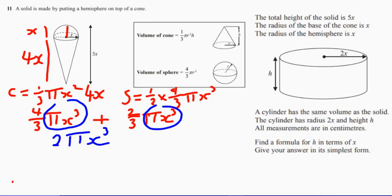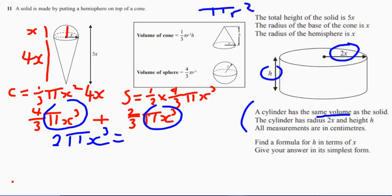Now let's look at the rest of the question — it tells us about a cylinder. It says a cylinder has the same volume, and we're given dimensions in letters. So the volume of the cylinder will be pi r squared multiplied by the height. The radius is 2x, so be careful — that gives us pi times 2x squared, which when expanded gives 4x squared times h.